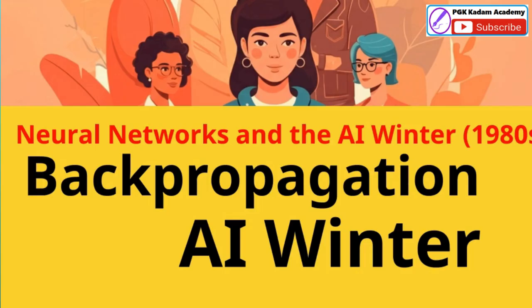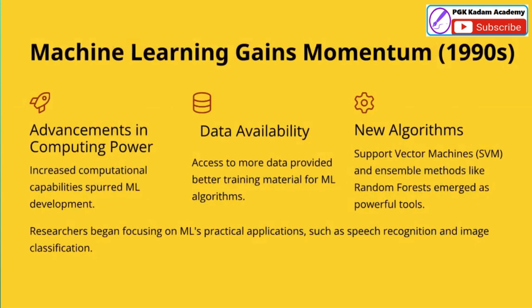The 1990s saw significant advancements in machine learning, driven by improvements in computing power, increased data availability, and the emergence of new algorithms. Increased computational capabilities allowed for more complex ML models and faster training. Access to more data provided better training material for ML algorithms, enabling them to learn more effectively. New algorithms like support vector machines and ensemble methods like random forests emerged as powerful tools, expanding the capabilities of machine learning.